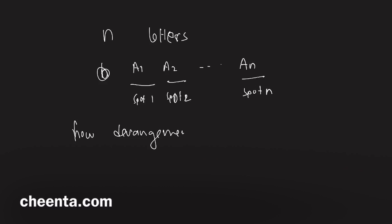Think about it, try to develop a formula for n letters. If you have n letters - maybe A1, A2, up to An - and spot 1 up to spot n, then how many derangements are possible?